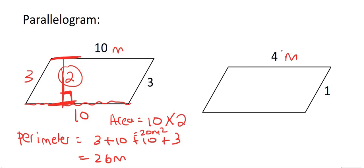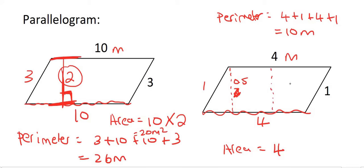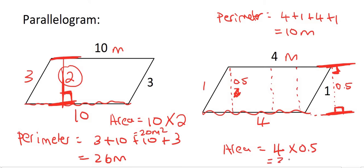For the last example, the perimeter is four plus one plus four plus one, which gives ten meters. To work out the area, we need the base length, which is four, and then the height. They might give it to you inside the shape or on the outside as a dotted line going from the top straight down to the bottom at a 90 degree angle. Let's say the height is 0.5. So you'd say four times 0.5, which gives you two meters squared.